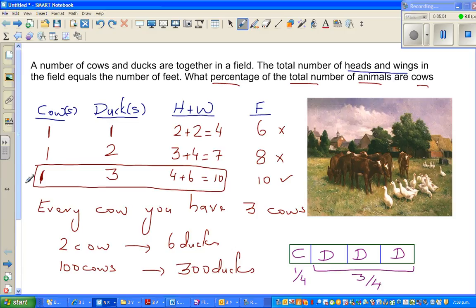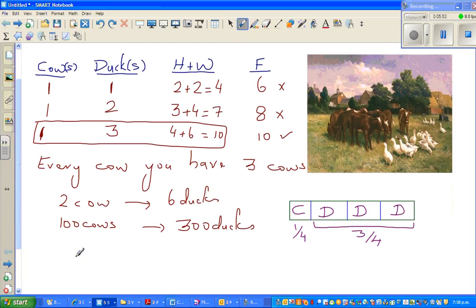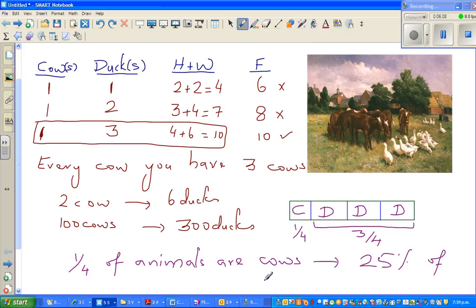So the answer is one quarter would be, we can say one quarter of the animals. I can say one quarter of the animals are cows. This that means 25% of the animals are cows.